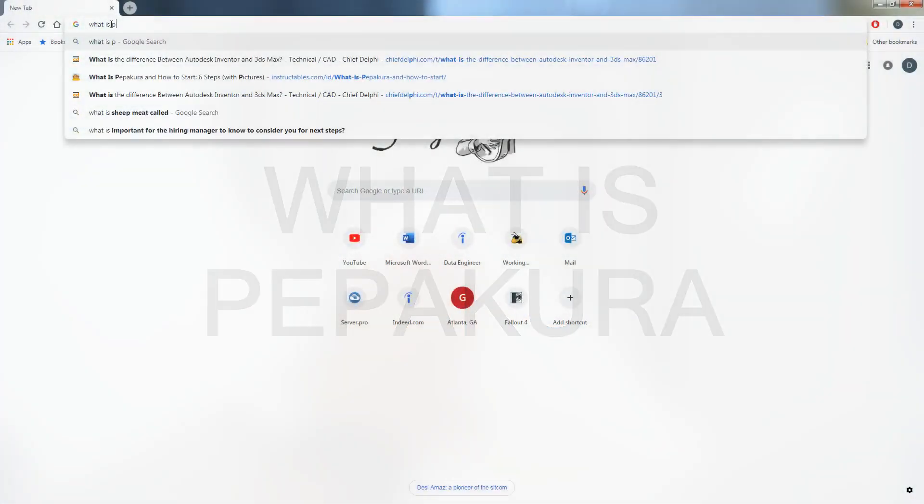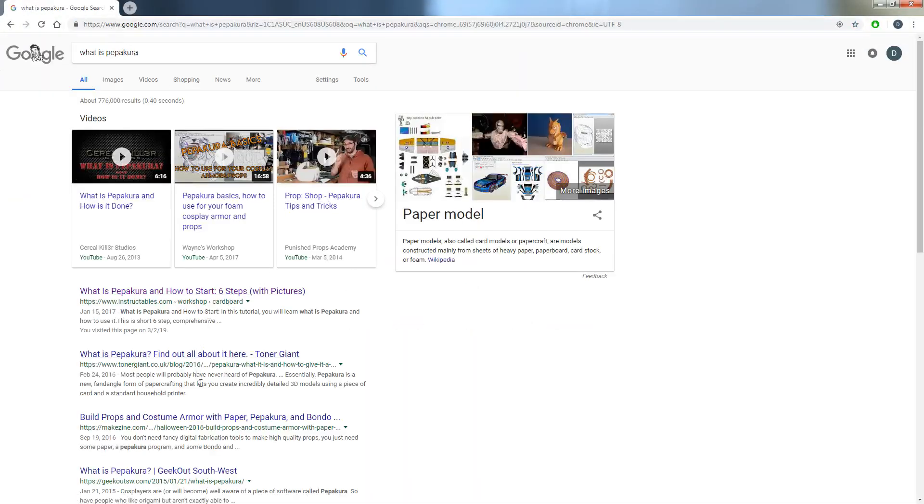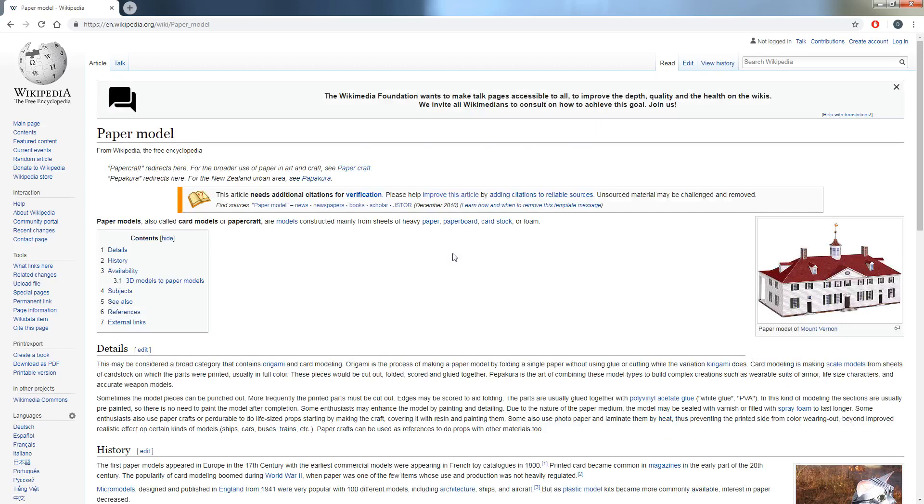You probably started with Google and went, hey Google, what's this thing? And Google probably wasn't very much help. Searching what is Pepakura on Google will most likely land you on the Wikipedia page for paper modeling, leaving us with the following description.